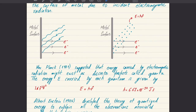We already know that in the photoelectric effect, electromagnetic radiation falls onto the metal surface, provides energy to the electron, and the electrons are emitted out. According to Einstein's explanation, the electromagnetic radiation delivers energy to electrons in the form of bundles of energy called photons.